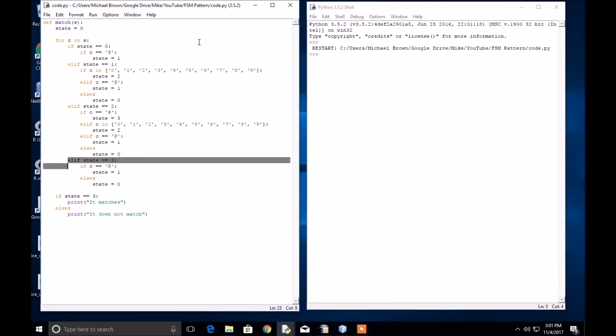Finally, if you're in state three and the next character is an @ sign, you go back to state one. Anything else, you go back to state zero. And once it ends, if when the for loop gets to the final character of the string S, if you're in state three, then the pattern must match.